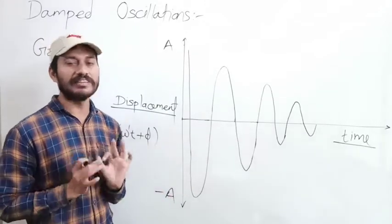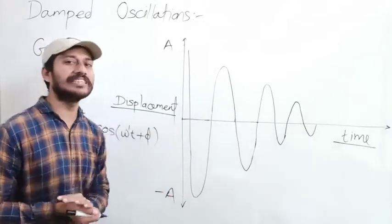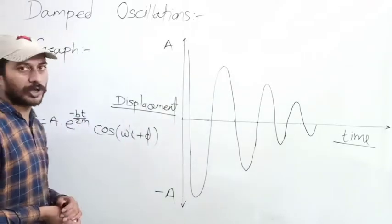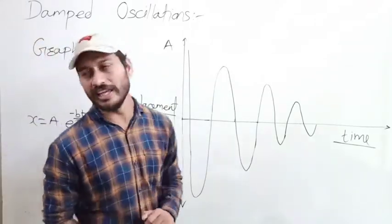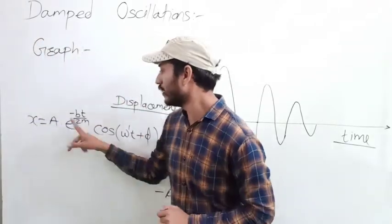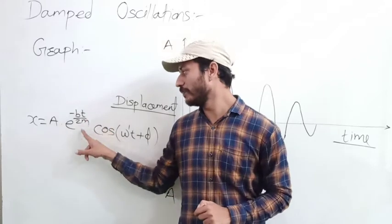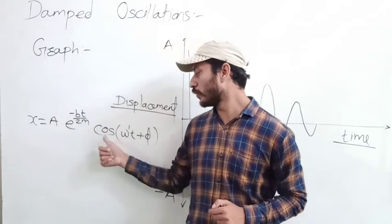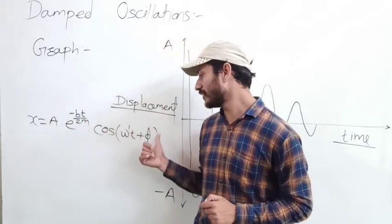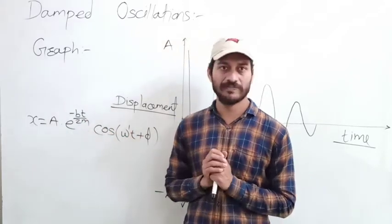The displacement formula is x equals A into e raised to power minus bt by 2m into cos of (omega dash t plus phi).